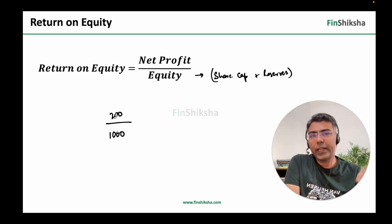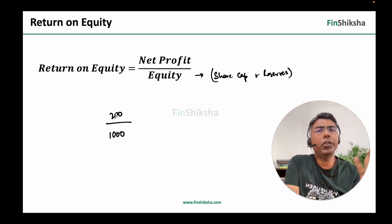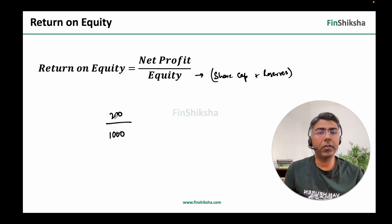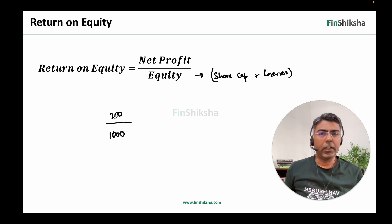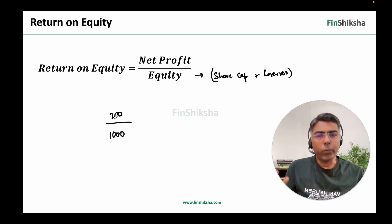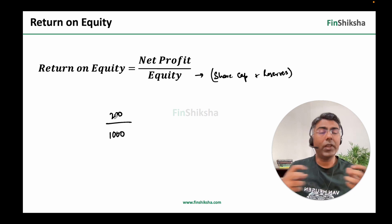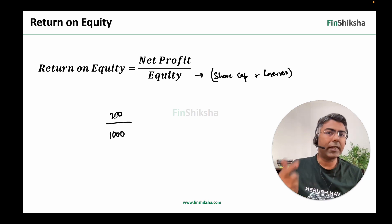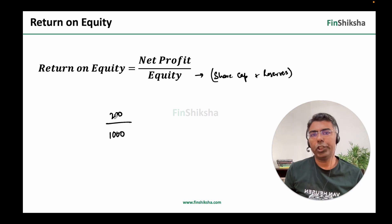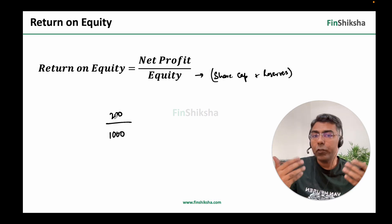The company will give shareholders the money it has made — 200 crore on 1000 crore equity — or reinvest it back. The shareholders' decision will be: look, you're making a 20% return on this money. What will I do with this money if you give it to me? I'll anyway have to reinvest it somewhere, so you might as well keep it. So in a sense, if return on equity is high, the company will always have access to capital.